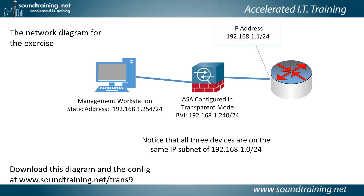Here's the exercise diagram. We have a management workstation, an ASA configured in Transparent Mode, and a router. Everything is on the same IP subnet — the 192.168.1.0/24 subnet. That's the key thing about Transparent Mode. The most common mode is Routed Mode, where you have different IP subnets on the inside and outside. With Transparent Mode, you drop the firewall into an existing network and it becomes a Layer 2 device. It still does traffic filtering and inspection, but it doesn't do NAT. The IP address on the firewall is configured strictly for management.